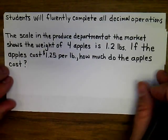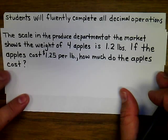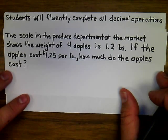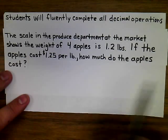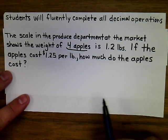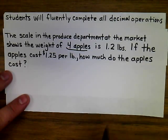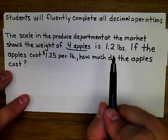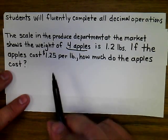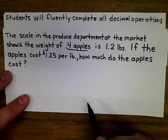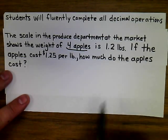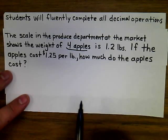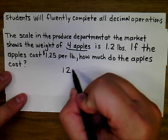A scale in the produce department shows the weight of four apples is 1.2 pounds. If the apples cost $1.25 per pound, how much do the apples cost? The first thing to realize is that the number of apples — four — is irrelevant. We only need the weight in pounds and the cost per pound. Because we're multiplying, we need to remember the rules for multiplying decimals: you don't need to line up decimal points when multiplying.